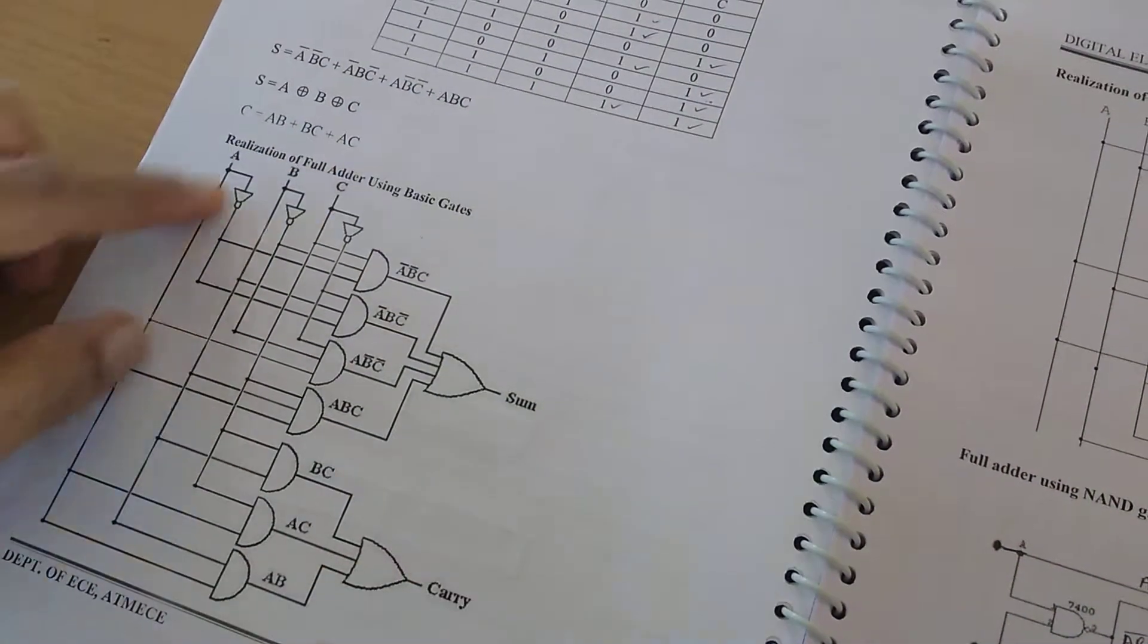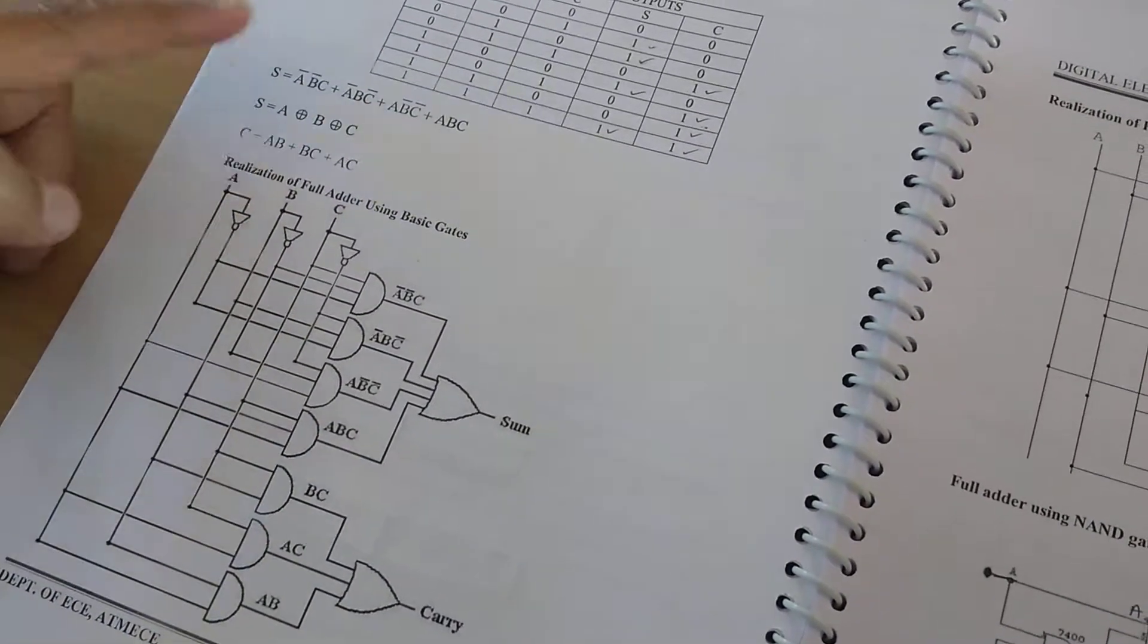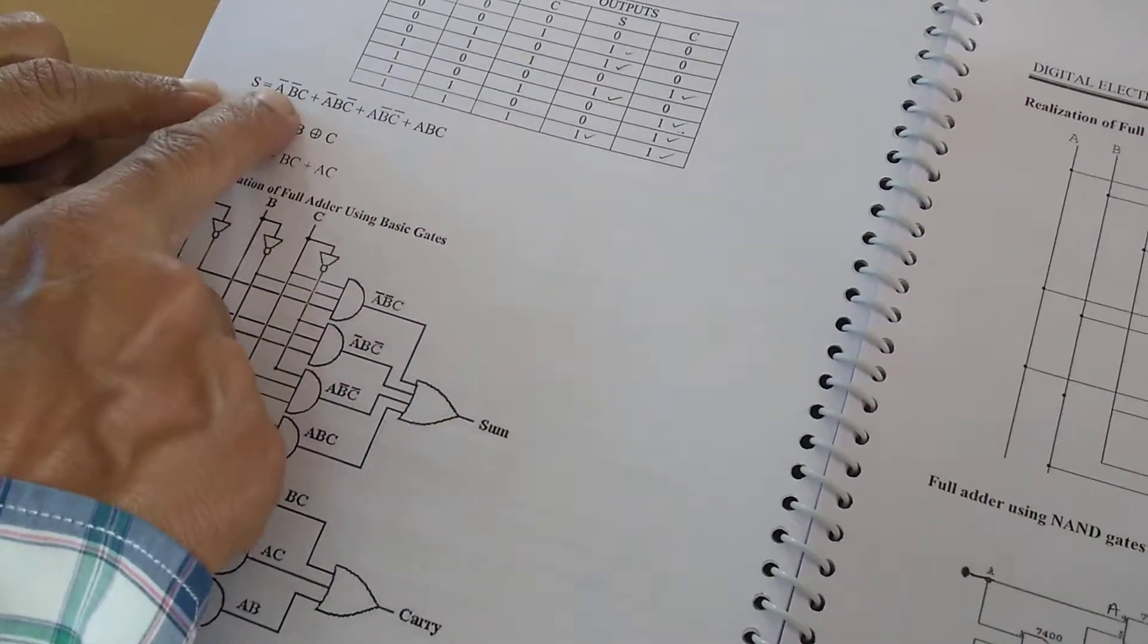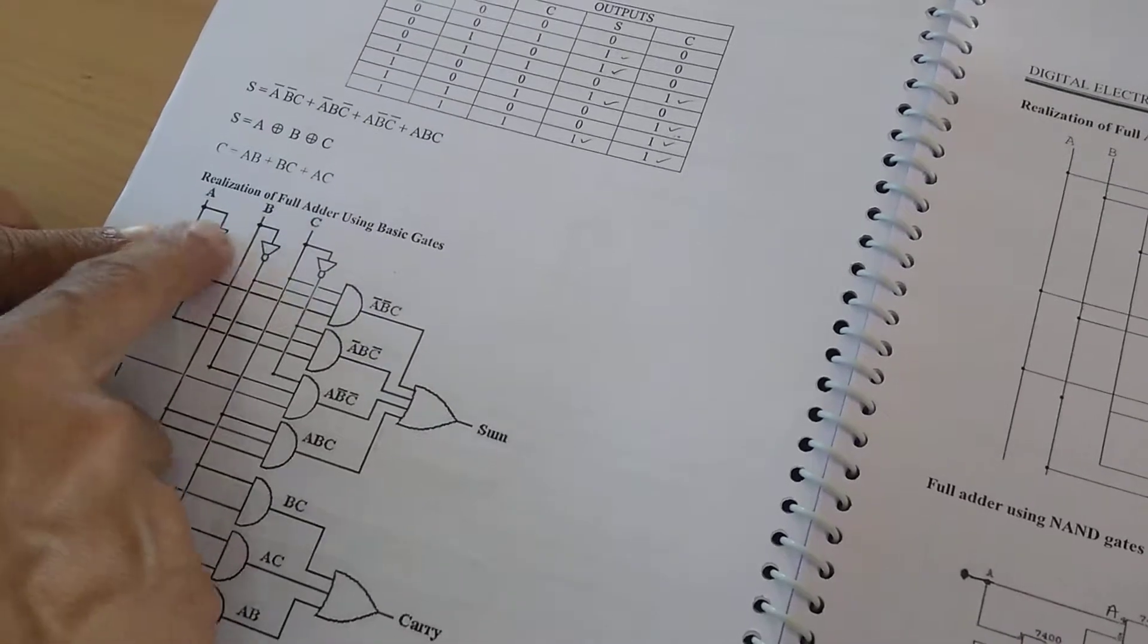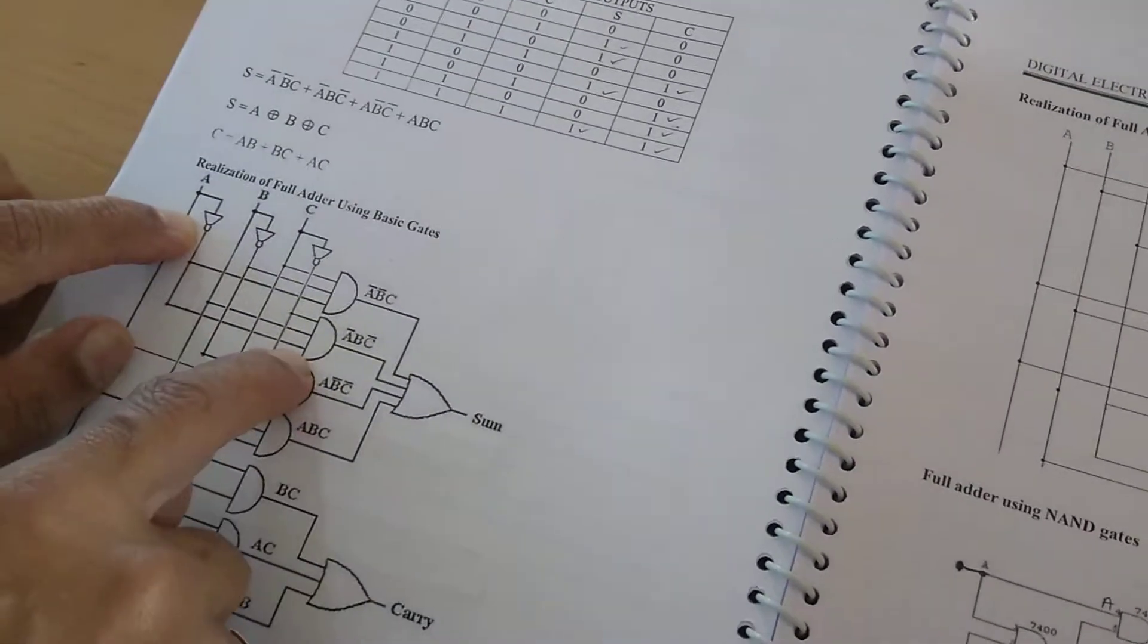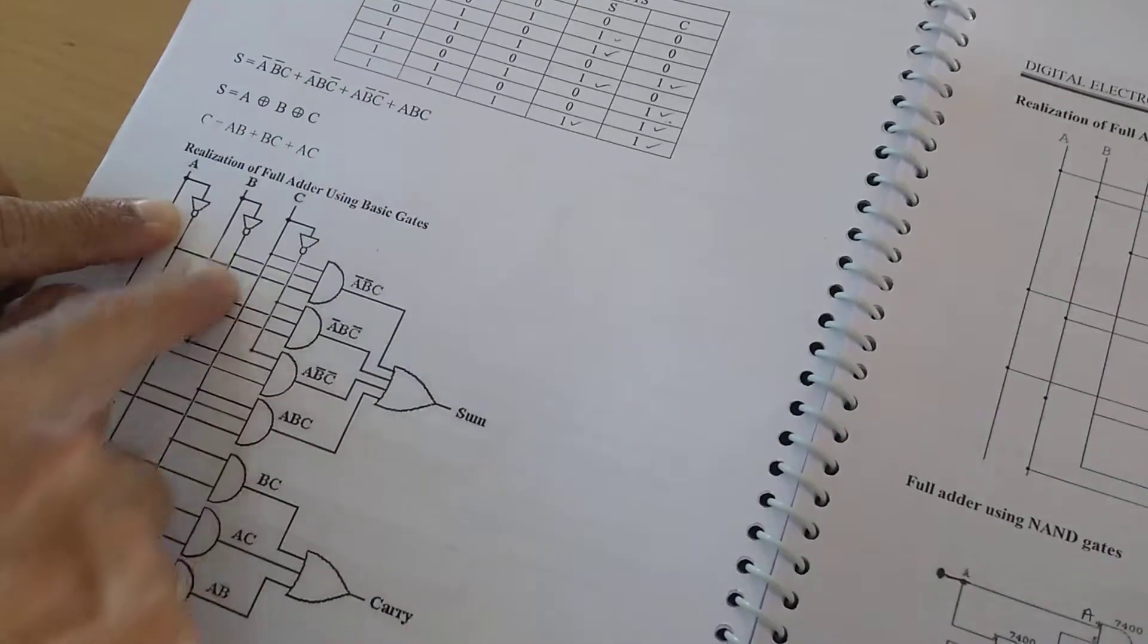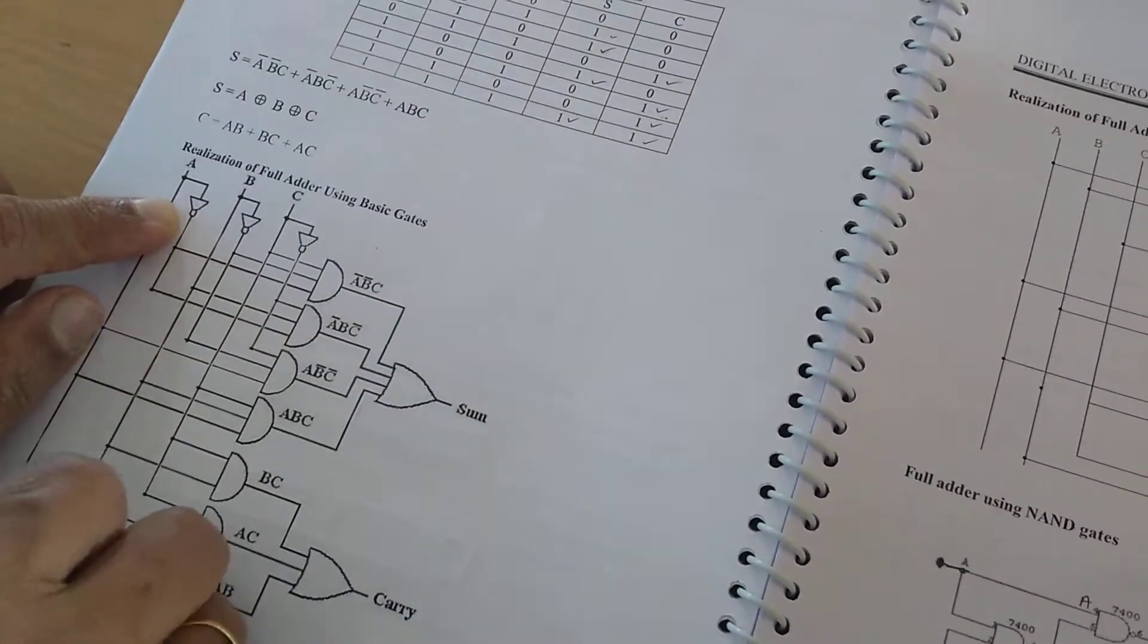Now we will come to the realization. For the basic gates, we will take these equations. If we see sum equals A bar B bar C, A is inverted using an inverter so we will get A bar, and similarly B inverted so we will get B bar, and then C is taken directly. That A bar B bar C is connected to the first AND gate.